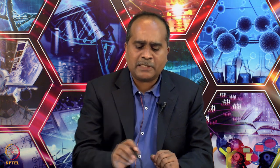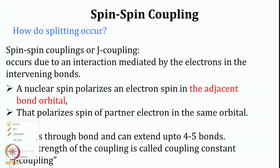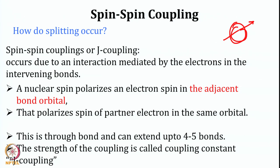What is the reason behind spin-spin coupling or J coupling? This happens because of interaction mediated by the electrons in the intervening bond. In simple terms, chemical shift arises because there is a spin and around it there are electronic clouds. Now if you look at this spin, it is not in isolation — there is another spin nearby and that spin can influence the chemical shift or resonance property of this spin. That coupling happens via the electrons between them. That is why this is called through-bond coupling.